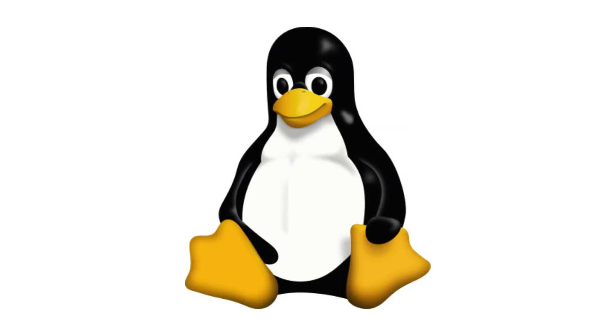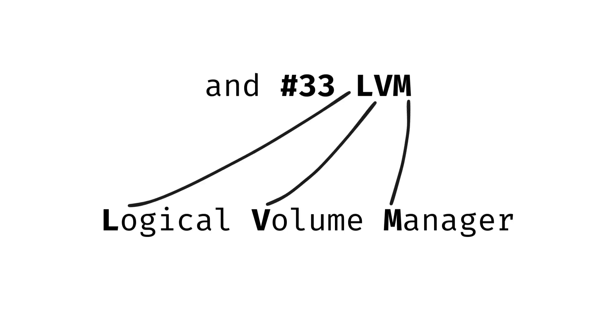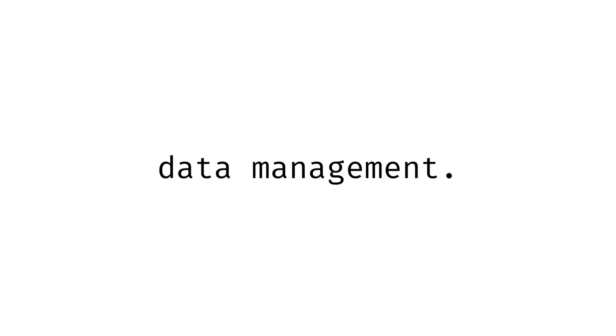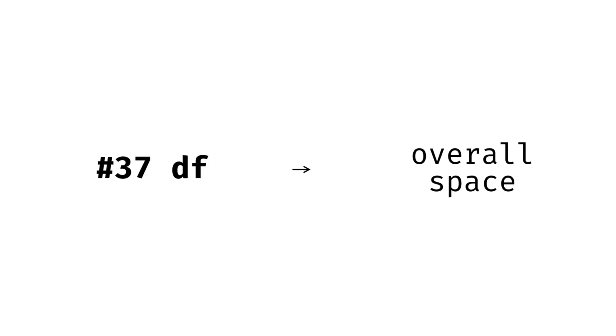For storage management, Linux provides tools like fdisk and parted to create or resize partitions, and LVM, Logical Volume Manager, for flexible disk management. File systems themselves can vary — common types are ext4, xfs, and btrfs, each offering different performance and features. You can check disk usage with commands like df for overall space, and du for directory sizes.